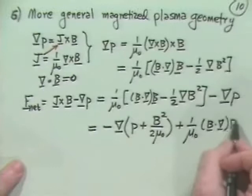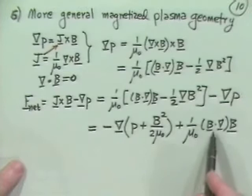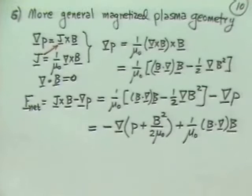Now, why didn't we have this last term when we dealt with a cylinder? Well, it turns out we had only radial derivatives and B was in the axial direction, so it goes away for a cylinder.